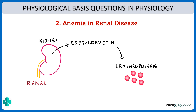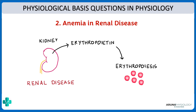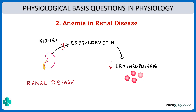In renal disease, because there is dysfunction of the kidneys, the production of erythropoietin is affected. This causes a decrease in erythropoietin, which in turn leads to anemia. That is the cause of anemia in renal disease — the key is erythropoietin.